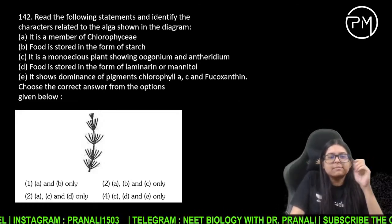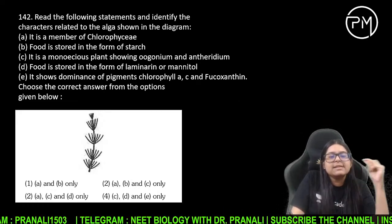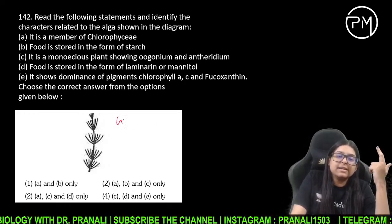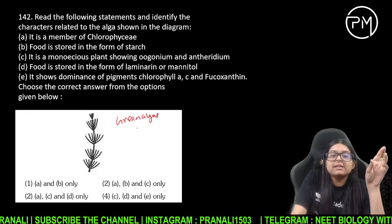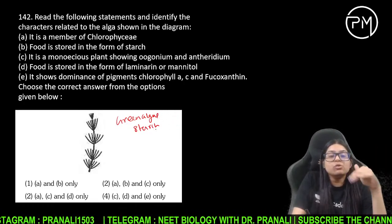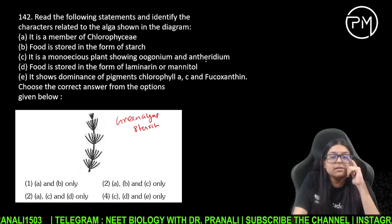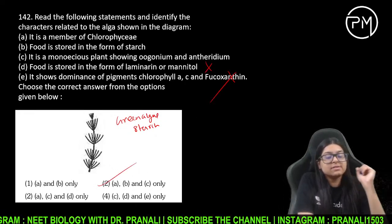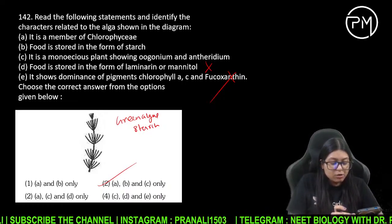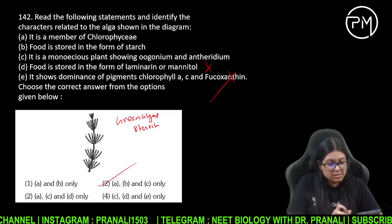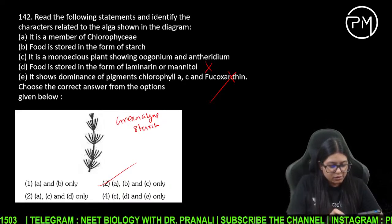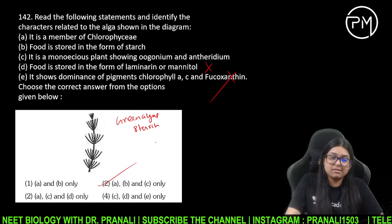Diagram batane ka time aa gaya hai — which algae is this? Kya yeh Chlorophyceae hai? Kya yeh green algae hai? Green algae mein food jo store hota hai woh starch hota hai. Kya ismein oogonium aur antheridium dono hain? Toh answer 2 ho jayega. Is algae ka naam — very good — it is Chara.